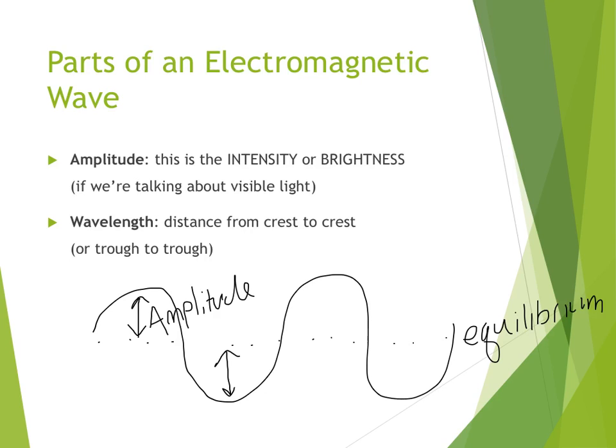Both of these are amplitudes. Amplitude, when we're talking about electromagnetic waves, is related to the intensity, or how bright something is, especially if we're talking about visible light. Amplitude has everything to do with how bright our colored light is.